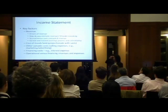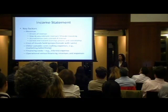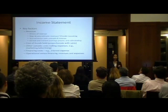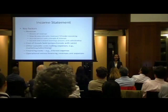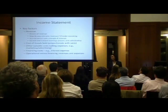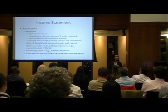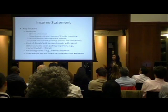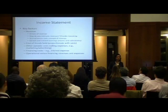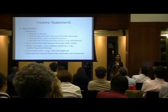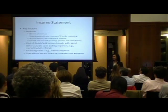Cost of goods sold: for those of you in industries where you are selling something, you have to pay attention to cost of goods sold. It is the cost you incur in buying the good that you are selling - that's what cost of goods sold represents. It's an expense when you sell something. But before you sell that inventory, it's not an expense - it's an asset. Inventory is an asset until you sell it.